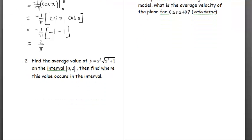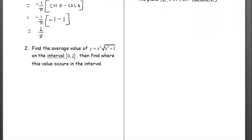Find the average value of y equals x squared times square root of x cubed plus 1 on the interval 0 to 2, then find where this value occurs. So a couple steps here.